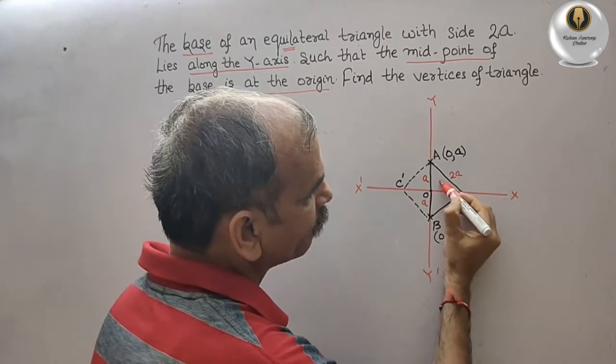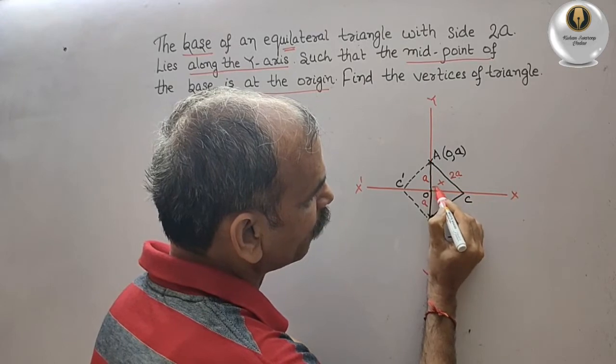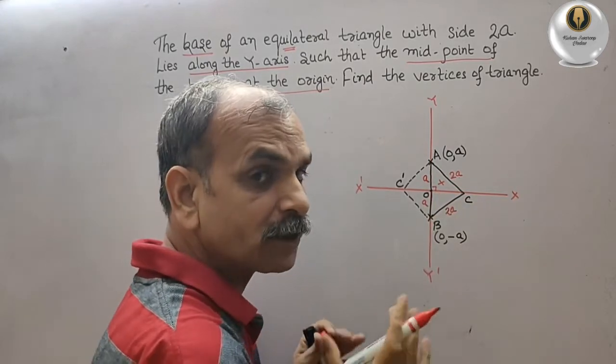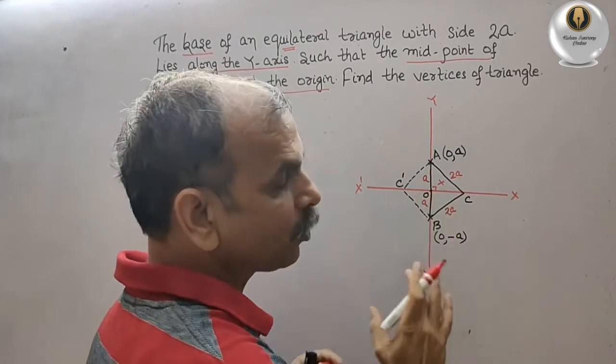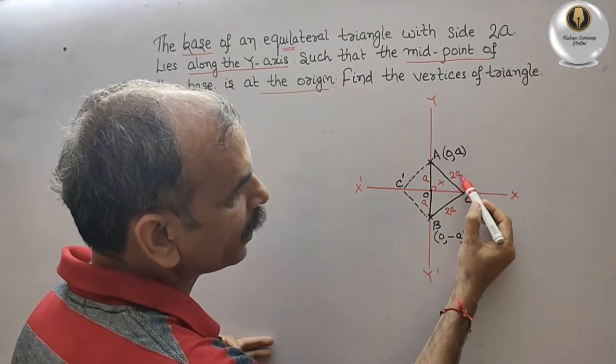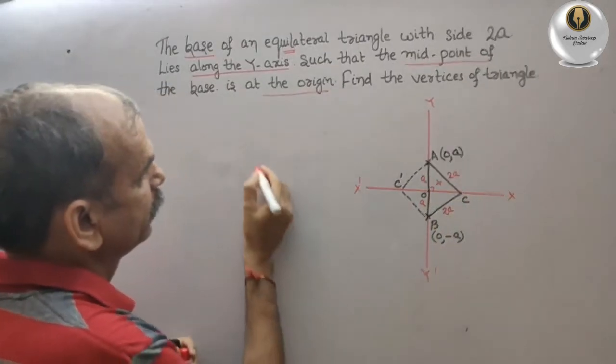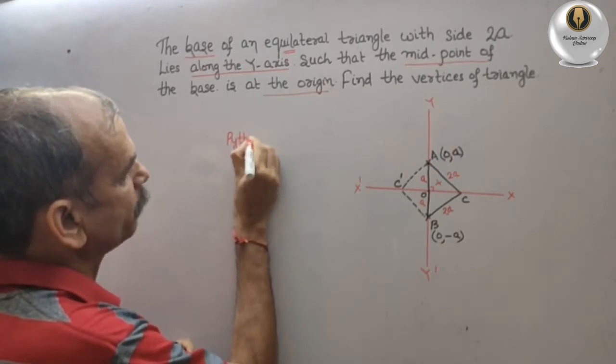So we will take one triangle, this triangle. So this forms 90 degrees, it forms 90 degree you know. So by Pythagoras theorem what will happen? Hypotenuse square, that means 2a all square. So we can say by Pythagoras theorem, your 2a whole square.